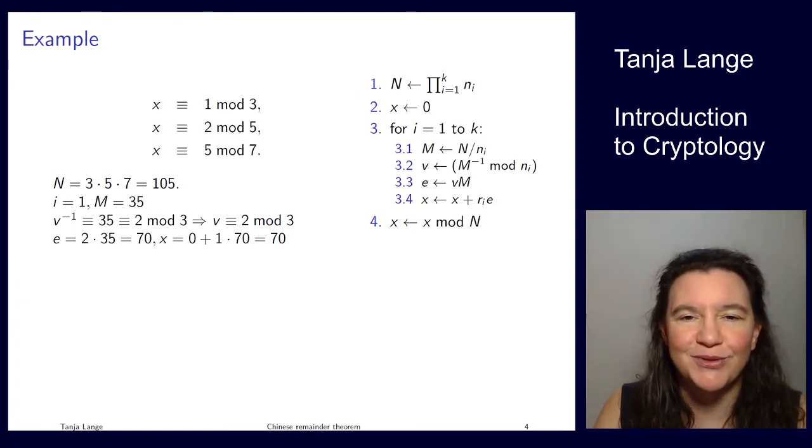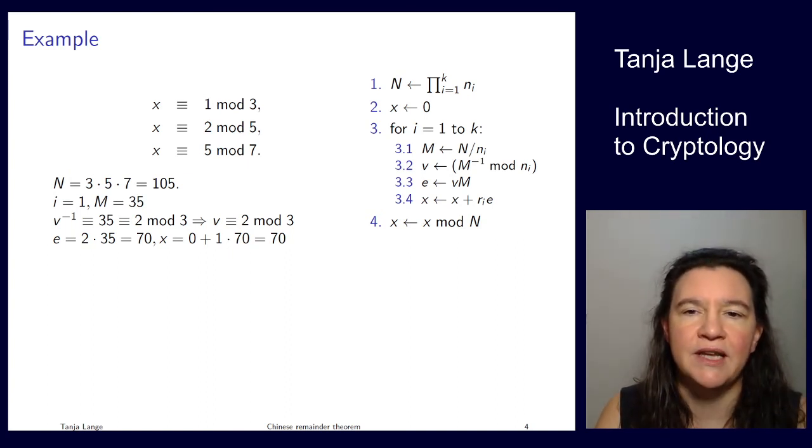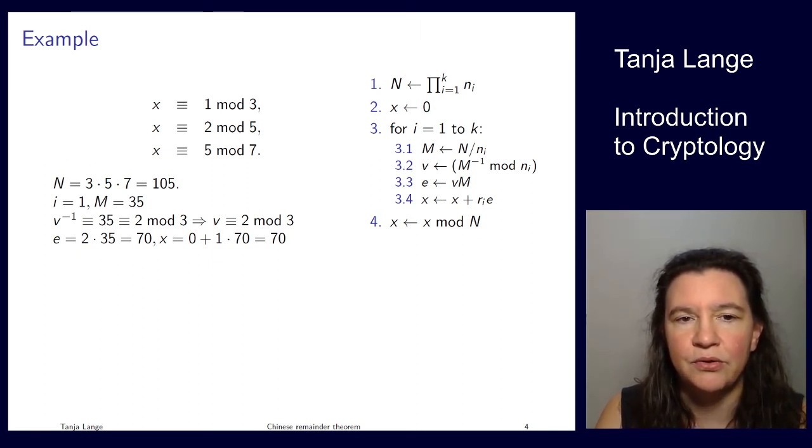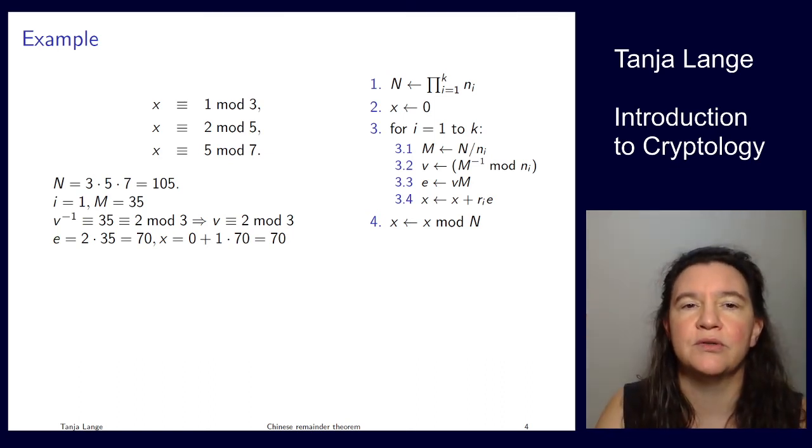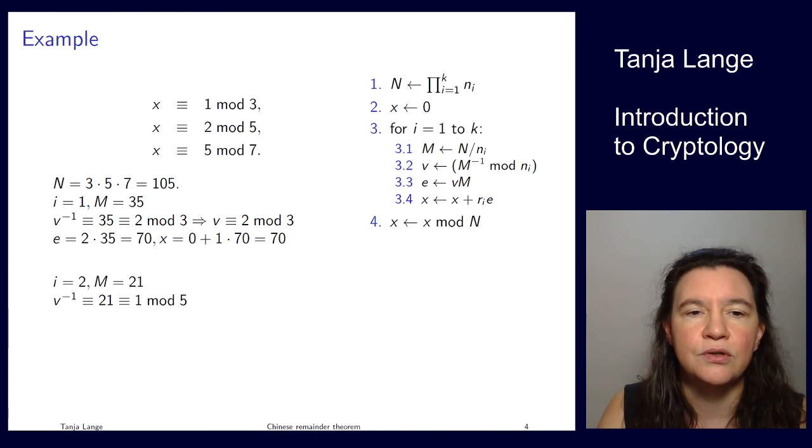But also the other ones will be pretty simple. So then I'm supposed to take e as the v which I just computed times M, so that's 2 × 35 = 70. And I'm supposed to update my x from 0 by adding rᵢ, which is 1 in the congruence up there. So x ≡ 1 mod 3 gives me 1, and I multiply this by 70. Then I move on to i = 2.